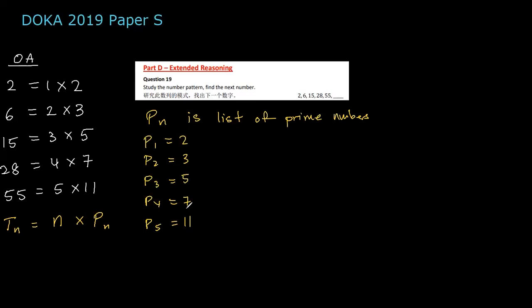Now we want to find the next number, so we can use SI to solve it. We are looking for T_6, which means it has to be 6 times p_6. The next prime number is 13, so T_6 is 6 times 13.